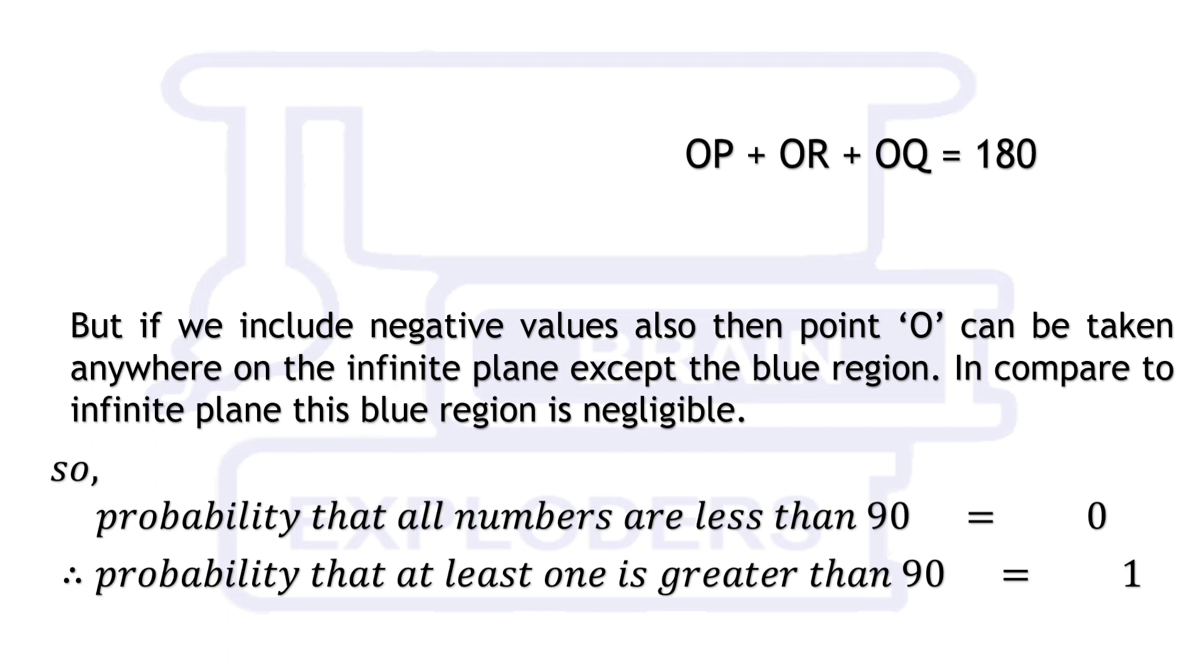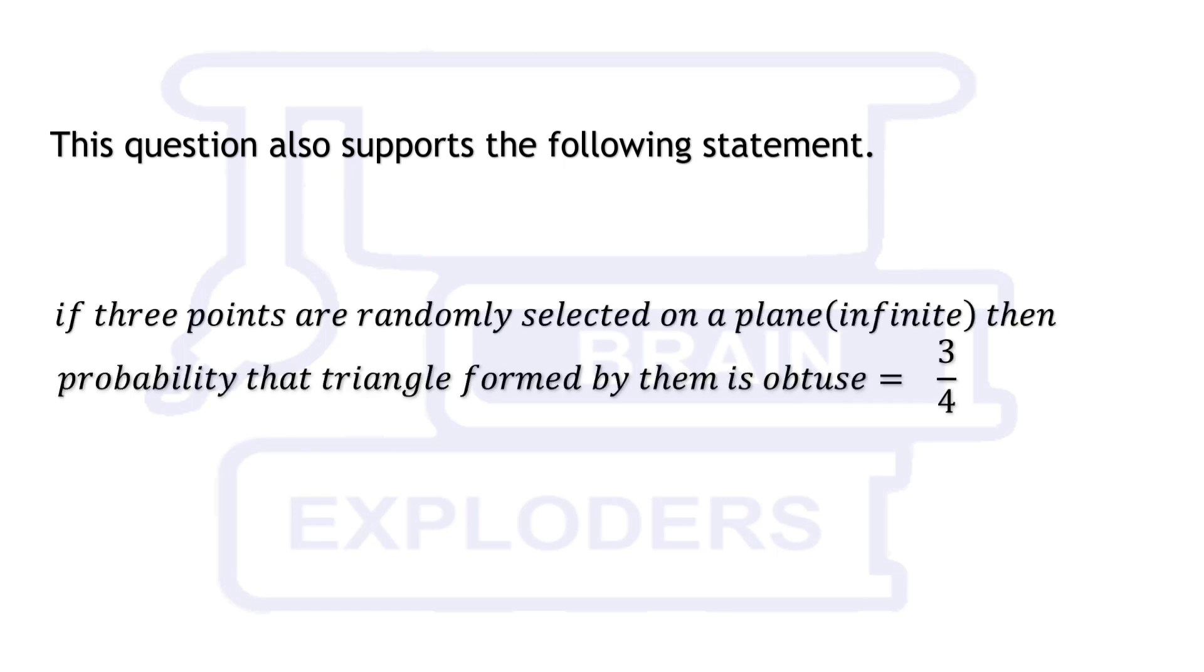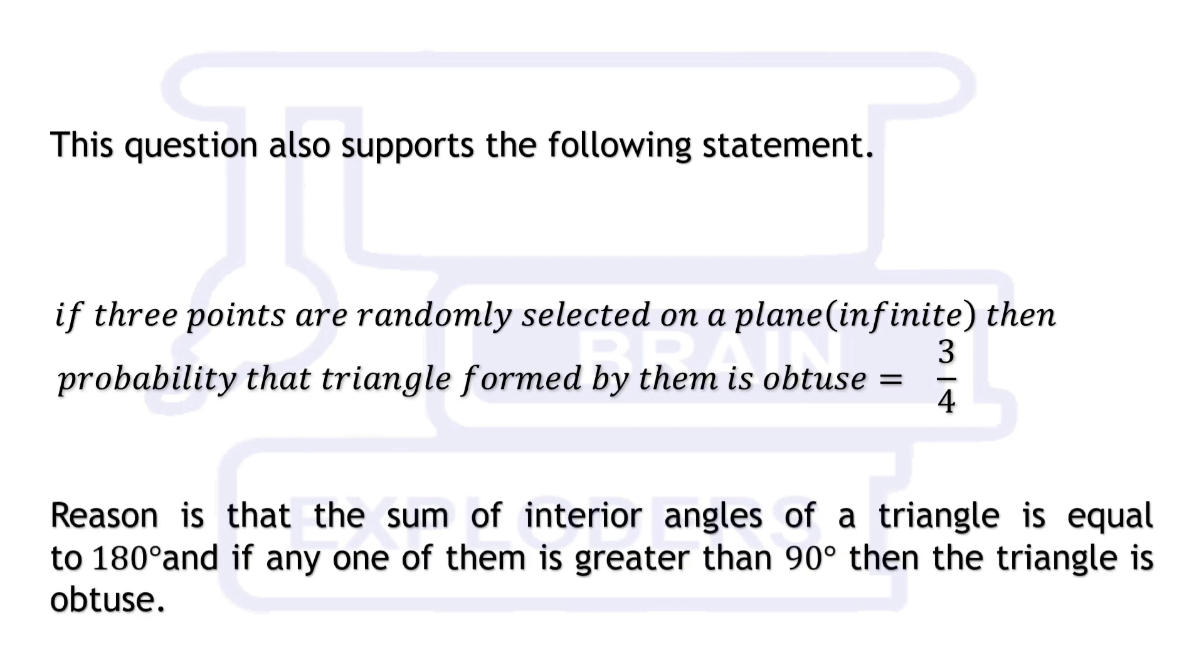This question also supports the following statement: If three points are randomly selected on a plane, then probability that triangle formed by them is obtuse is equal to 3 by 4. Reason is that the sum of interior angles of a triangle is equal to 180 degrees, and if any one of them is greater than 90 degrees, then the triangle formed is obtuse.